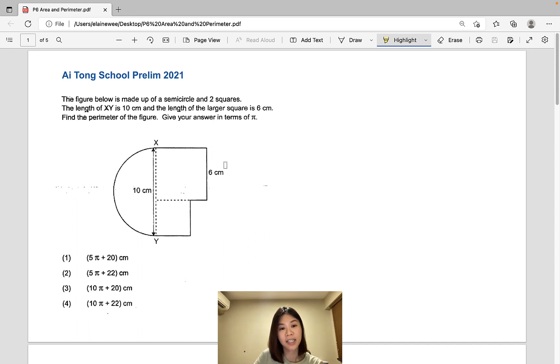Firstly, let's analyze this shape. The perimeter is made up of the circumference of a semicircle, two sides of this square, two sides of this larger square, and this little awkward length over here.